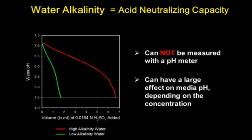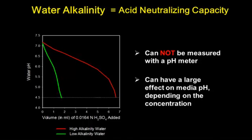If you look at the graph, on the bottom we have the concentration of sulfuric acid added to a water sample, and on the left we have water pH. Both waters start at the same pH. The green line would be a low alkalinity water — it requires very little acid to bring the pH down to 4.5. The red line, even though it starts at the same pH, requires much more acid to take the pH down to 4.5. That's because pH 4.5 is the point where you have zero alkalinity. The red line would be a high alkalinity water.